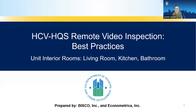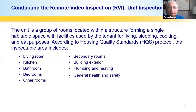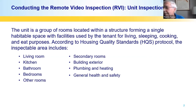Hello Tom, welcome. In this video we're going to be discussing how to inspect the living room, kitchen, and bathroom and guiding the proxy in inspecting these particular areas. The unit is a group of rooms located within the structure forming a single habitable space with facilities used by the resident for living, sleeping, and eating purposes according to Housing Quality Standards, HQS. It includes a protocol for inspecting the living room, kitchen, bathroom, bedrooms, and other rooms. Secondary rooms would be your building exterior, plumbing and heating, and general health and safety.